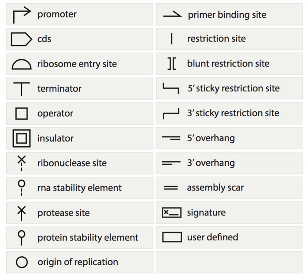The first level is Parts — pieces of DNA that form a functional unit, for example promoter, RBS, etc. The second level is Device — a collection or set of parts with a defined function. In simple terms, a set of complementary BioBrick parts put together forms a device.